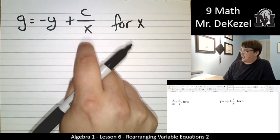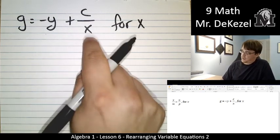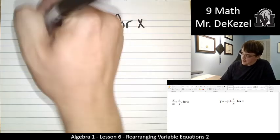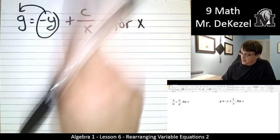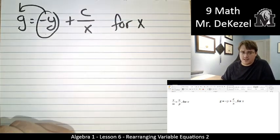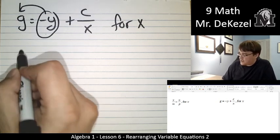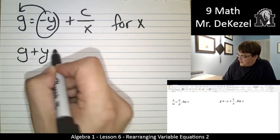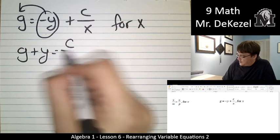So we are going to try to get x all by itself. So it's over here. We're going to get moving this part over. It's negative on this side, it's going to be positive y on the other side. So we have g plus y is equal to c over x.